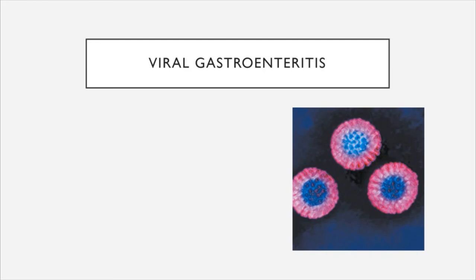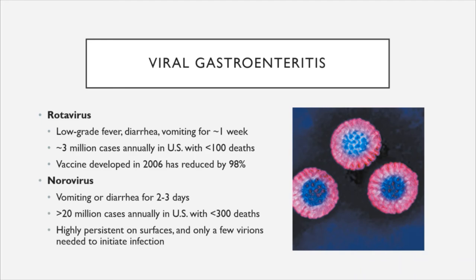Next, we have viral gastroenteritis, the third and final viral infection of the digestive system, caused most commonly by rotavirus and norovirus. Rotavirus is associated with a low-grade fever, diarrhea, and vomiting for approximately one week. There are approximately 3 million cases annually in the U.S. with less than 100 deaths. It's treatable with rehydration therapy. A vaccine developed in 2006 has reduced its incidence by 98%, prioritized because it has a higher mortality rate among infants and children.